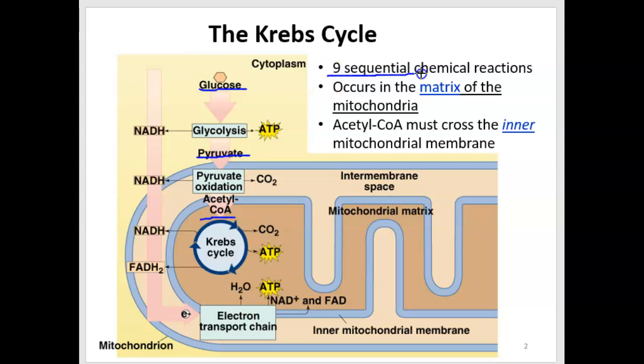The Krebs cycle consists of nine different chemical reactions. And those chemical reactions are going to produce some gas in the form of carbon dioxide, a little bit of ATP. Maybe the most important product is NADH.